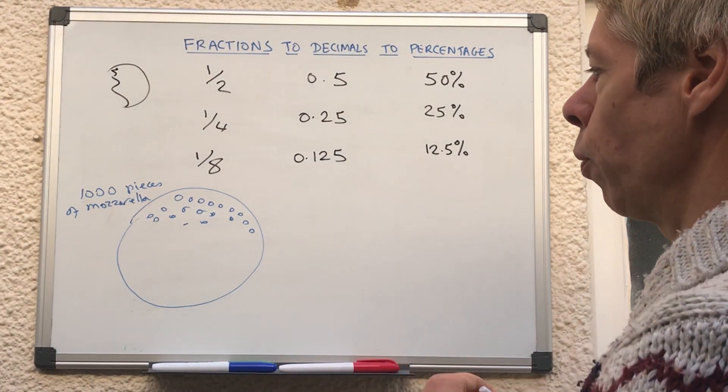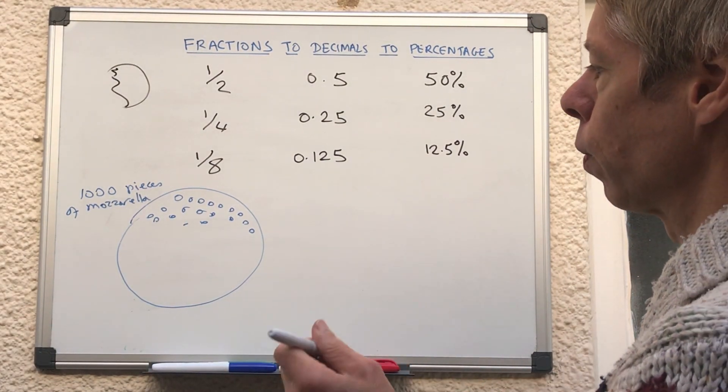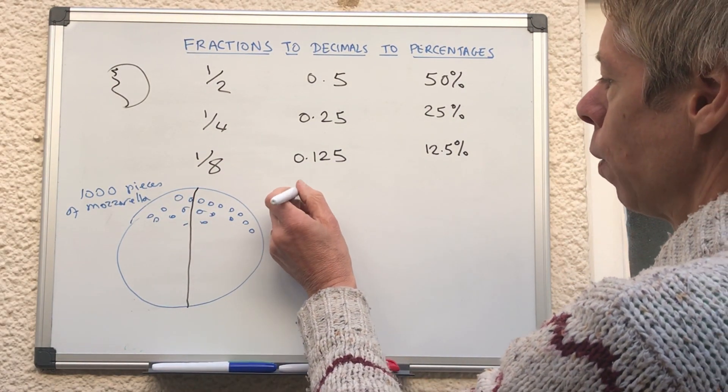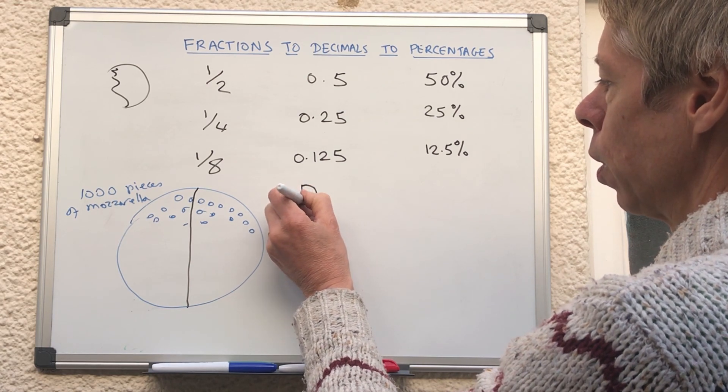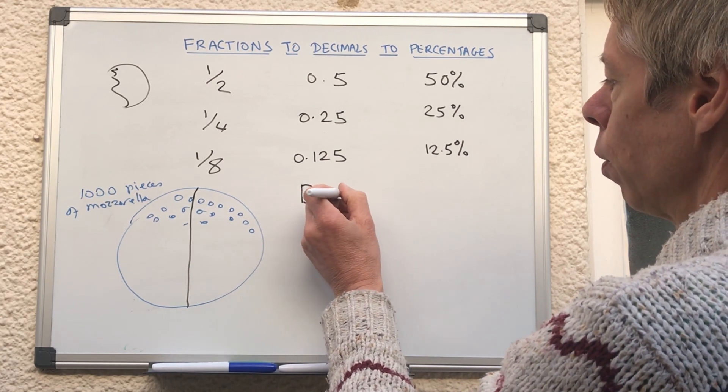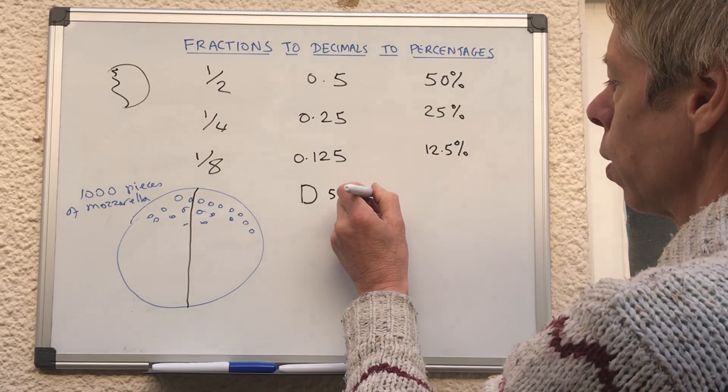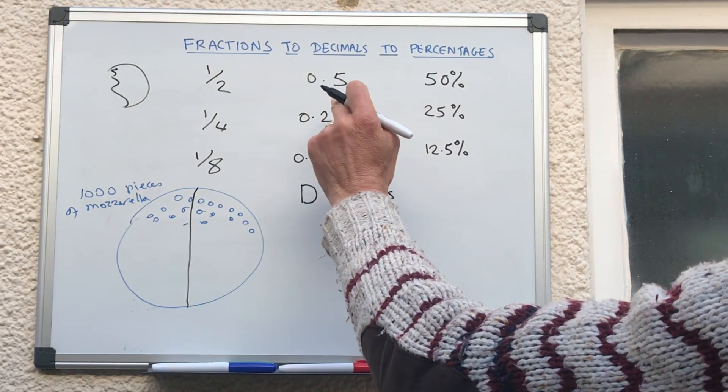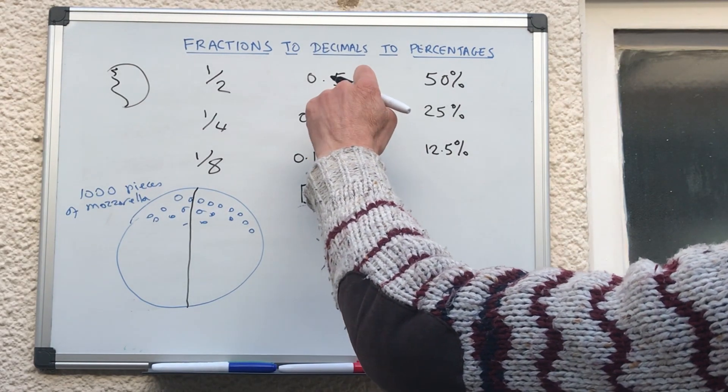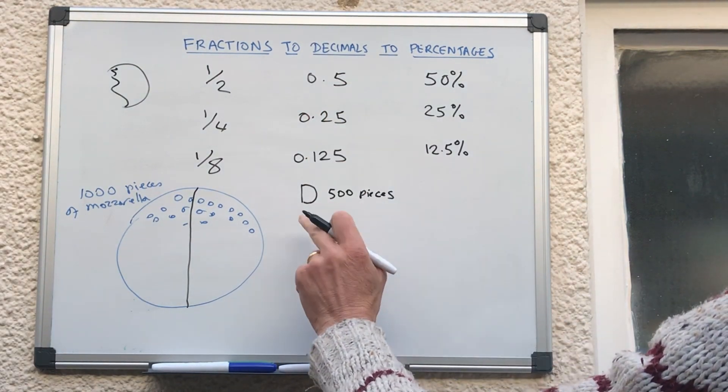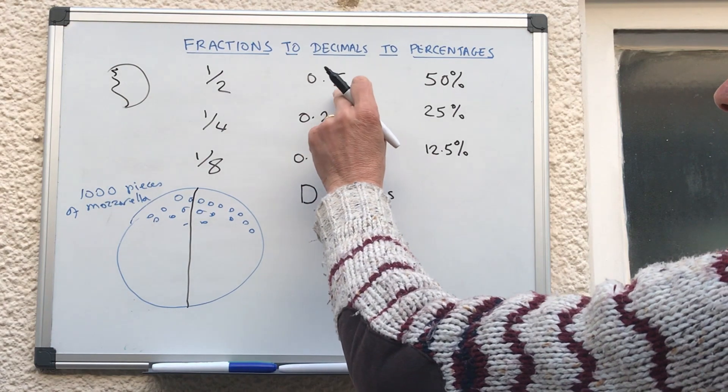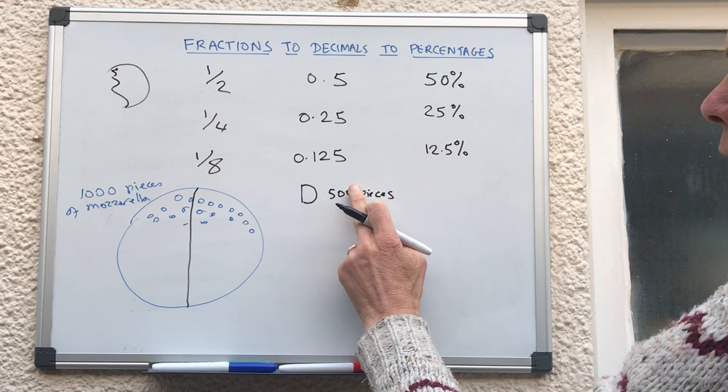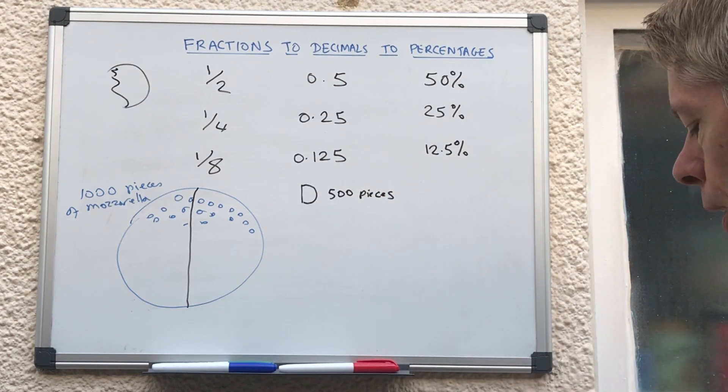So what happens if we divide it into two? So each piece, each half, has now got 500 pieces on it. So 500 pieces, that is where the 0.5 bit comes in. So half of a pizza is 0.5. And then 50%, well, if you take off that zero, that's where the 50 bit comes in.